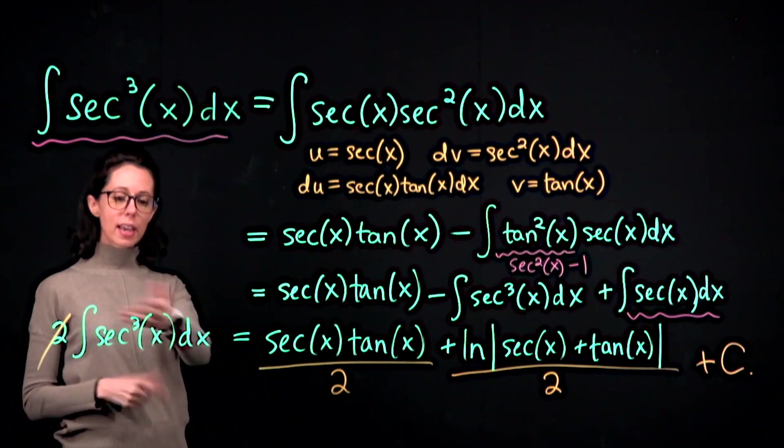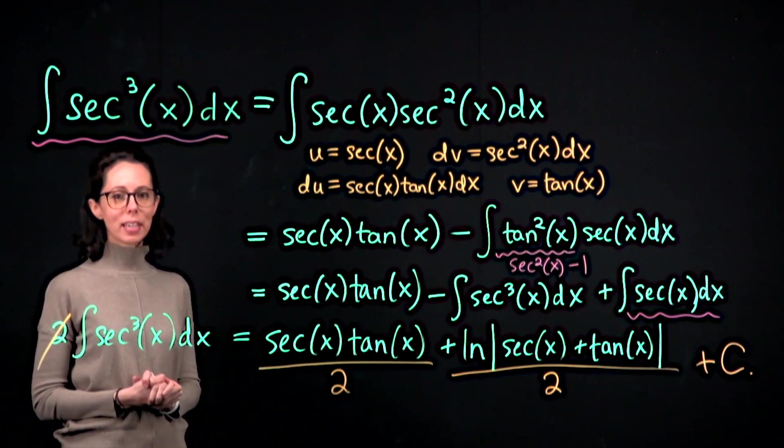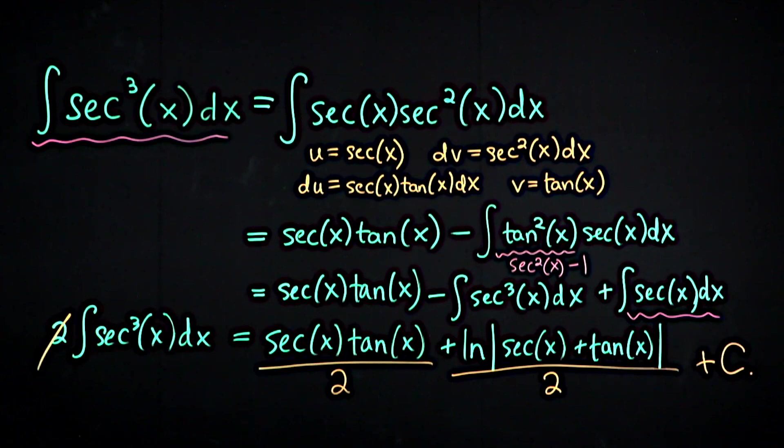So this is how we can anti-differentiate the cube of the secant function. Thank you.